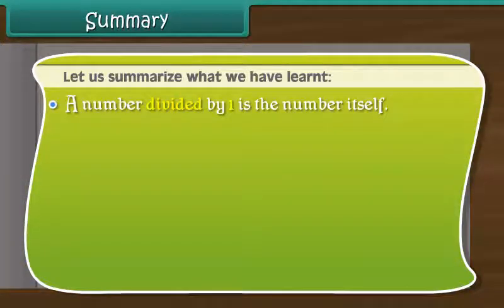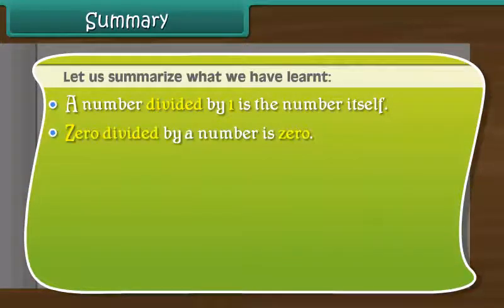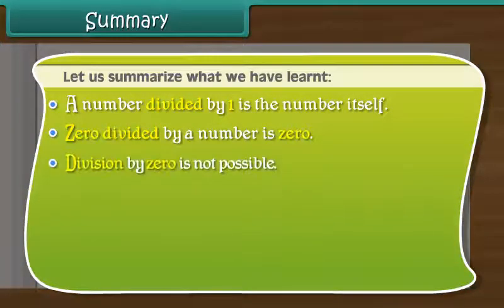A number divided by 1 is the number itself. 0 divided by a number is 0. Division by 0 is not possible.